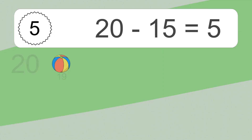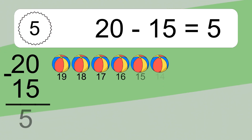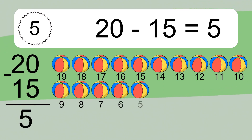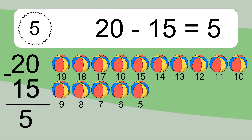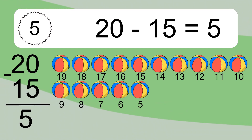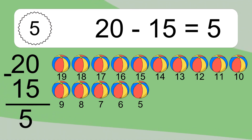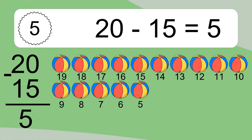14 minus 1 equals 5. Let's count it: 19, 18, 17, 16, 15, 14, 13, 12, 11, 10, 9, 8, 7, 6, 5.